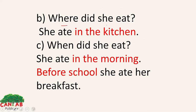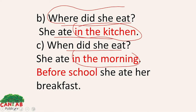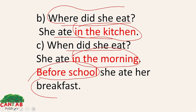Where did she eat? She ate in the kitchen. 'In the kitchen' is your adverbial phrase of place — where the action happened. When did she eat? In the morning. She ate in the morning — it tells you when the action happened.